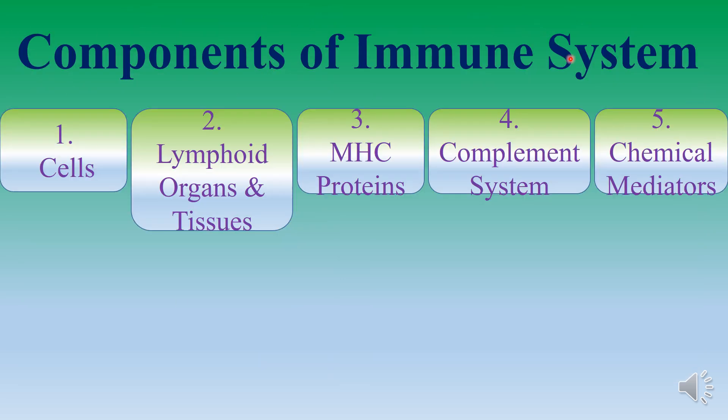The components of the immune system include the cells, the lymphoid organs and tissues, the major histocompatibility complex proteins, complement system, and chemical mediators. Anatomically, the immune system consists of different lymphoid organs and tissues present throughout the body, interconnected by blood and lymph vessels. They provide various cells involved in immunity, which include immunocompetent T and B cells. They are also sites where antigen is first trapped and lymphocytes interact with it to develop an immune response.